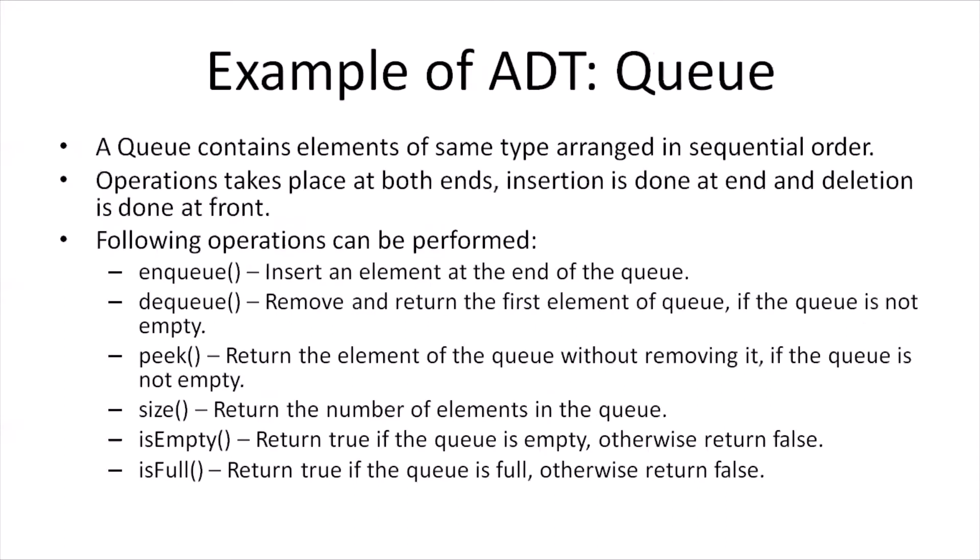Like the list and stack abstract data types, we also have the Queue abstract data type. A queue ADT mimics the behavior of a normal queue encountered in everyday life. It contains elements of the same type arranged in sequential order. However, operations on a queue take place at both ends — insertion is done at the end, while deletion happens from the front. The operations on a queue are enqueue, dequeue, peek, size, isEmpty, and isFull.